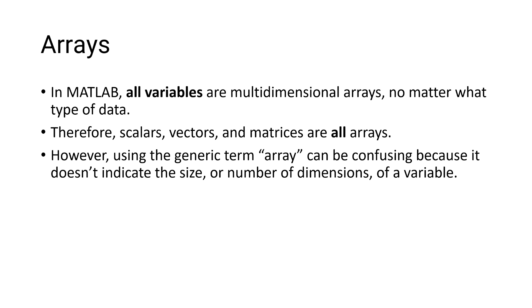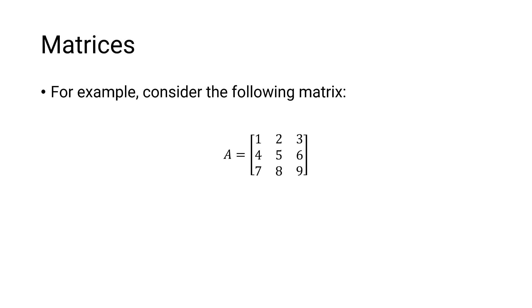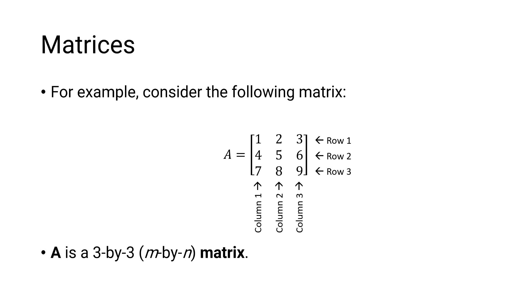So let's take a look at how MATLAB describes scalars, vectors, and matrices. First, let's take a look at matrices. In MATLAB, a matrix is a two-dimensional array that has a size of m by n, where m and n are both non-negative integers. The number of rows in the matrix are given by m, while the number of columns are given by n. Consider the following matrix A. A has three rows and three columns, and therefore A is a three by three matrix, where m is the number of rows and n is the number of columns.